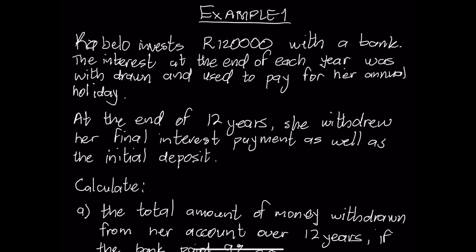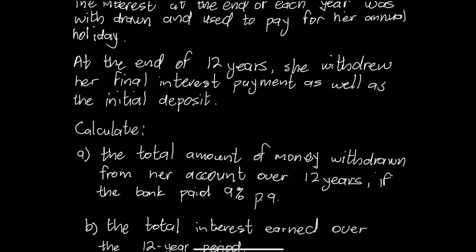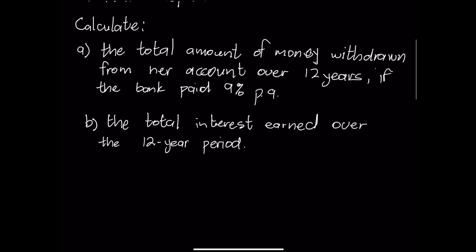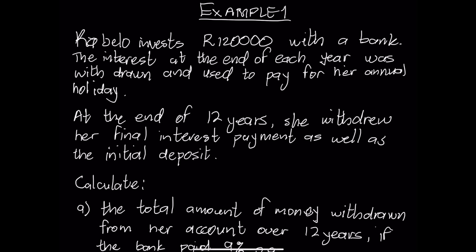Let's jump into an example. Gabelo invests R120,000 with the bank. The interest at the end of each year was withdrawn and used to pay for her annual holiday. At the end of 12 years, she withdrew her final interest payment as well as her initial deposit. We need to calculate the total amount of money withdrawn from her account over the 12 years if the bank paid 9% interest per annum. This would be simple interest because she simply withdraws the interest — the interest is charged on the capital amount she has invested.